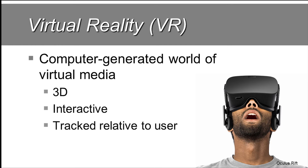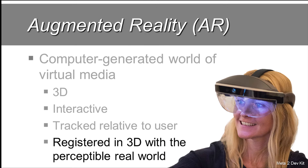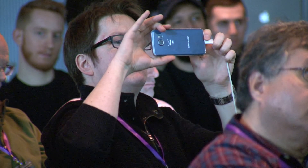When we use the phrase VR, we're referring to a computer-generated world — it's full of virtual media of various sorts, not just things you see. That stuff is 3D, it's interactive, and it's tracked relative to the user. I've exemplified that with our infamous Oculus Rift fish-face picture of someone all locked in and clearly looking at something he obviously finds exciting. Augmented reality is all of the above, except this virtual stuff is registered in 3D with the perceptible real world. By registered, I mean it is geometrically aligned, photometrically aligned, and ideally it should look to you as if it were really actually there.